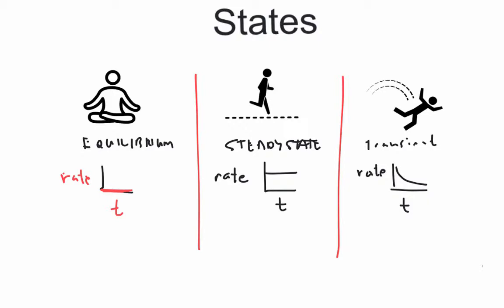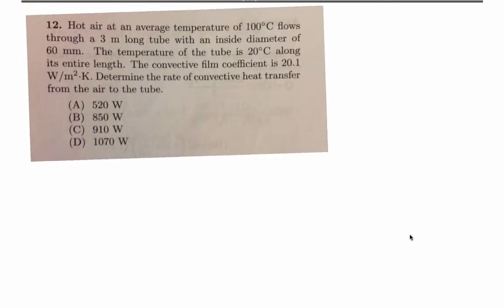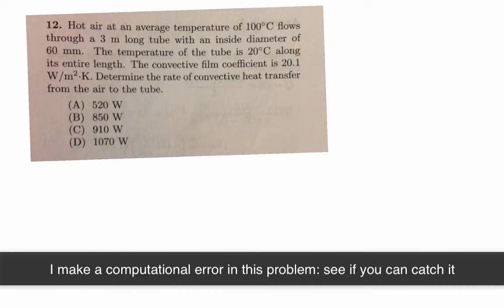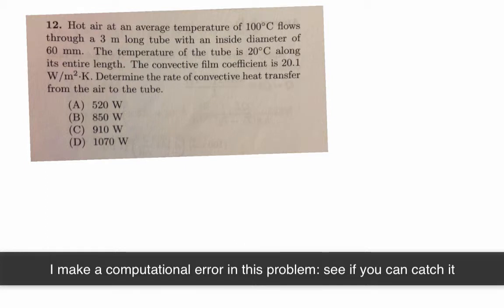So let's put this into practice. We have here a situation where we have hot air with an average temperature of 100 degrees C and it flows through a three meter long tube. It gives you the inside diameter, and it says the temperature of the tube is 20 degrees C along its entire length. What I often do is start out with a sketch just to kind of get my mind around what's happening in the problem. So they tell you that there's a three meter long tube.